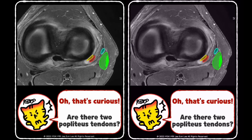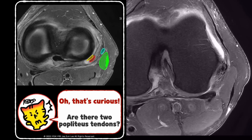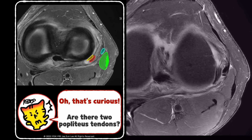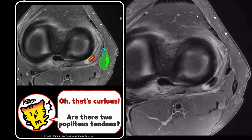On the axial image, we can clearly see the popliteal tendon. However, just anterior to it, there's another low signal intensity structure. Does this mean there are two popliteal tendons?